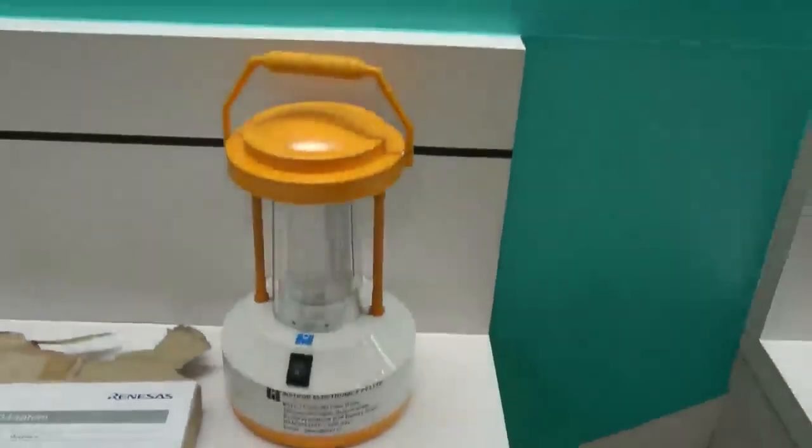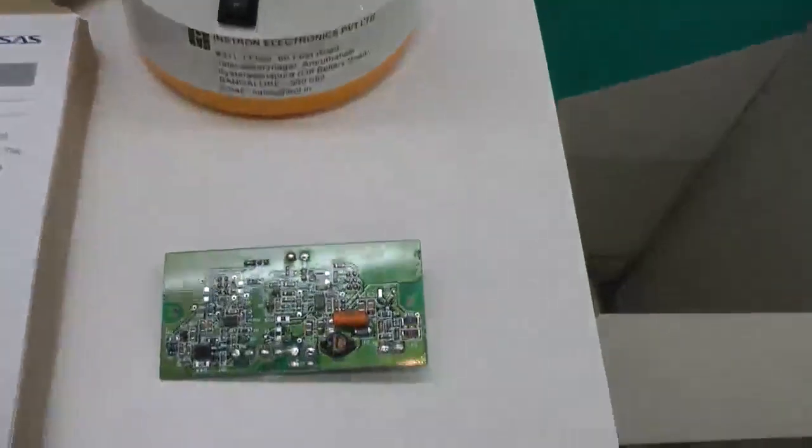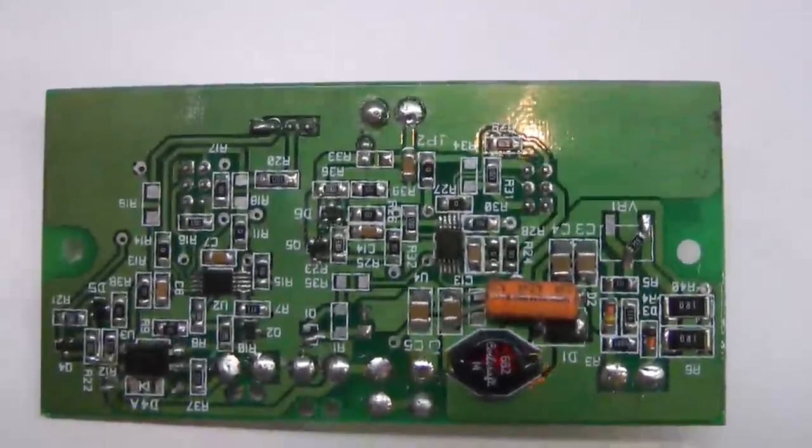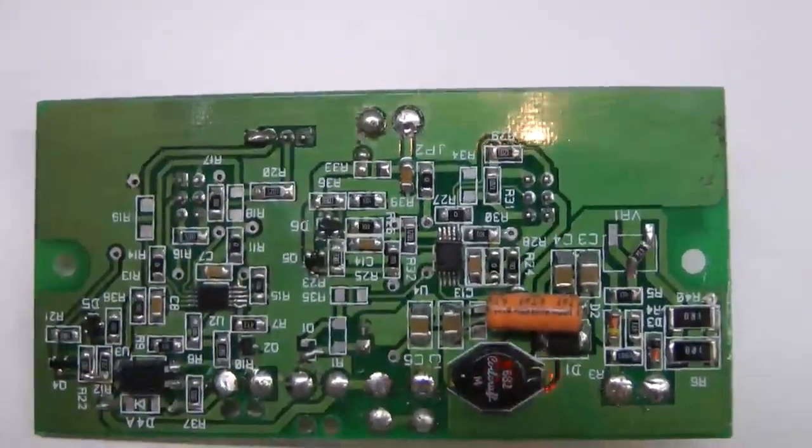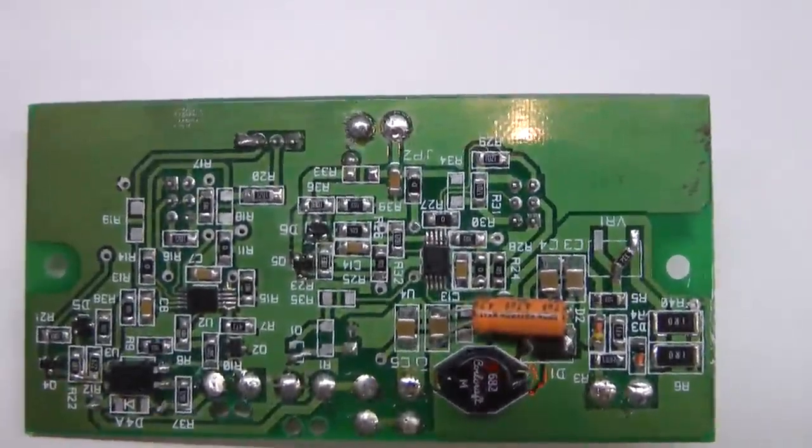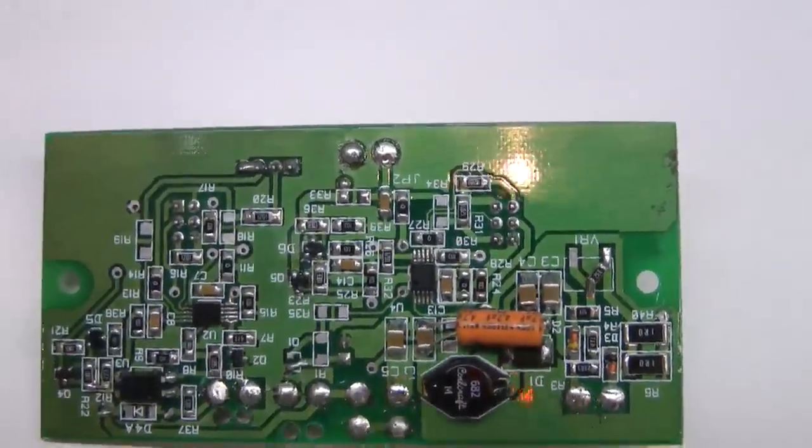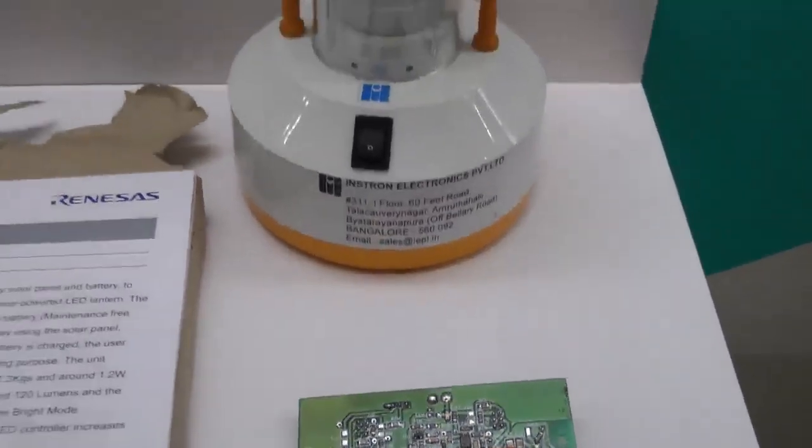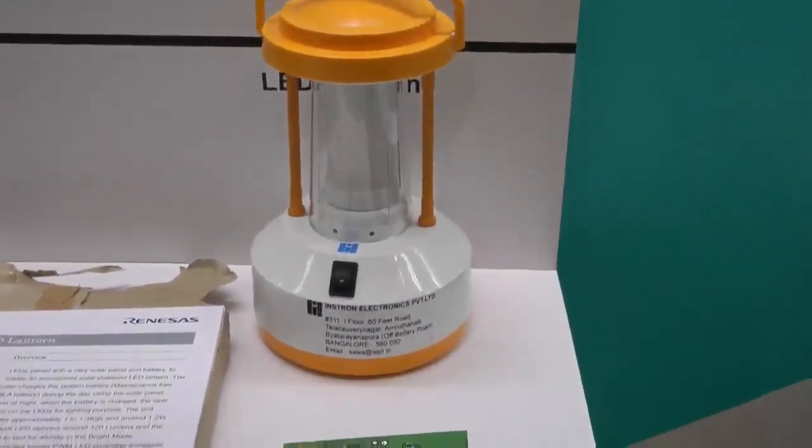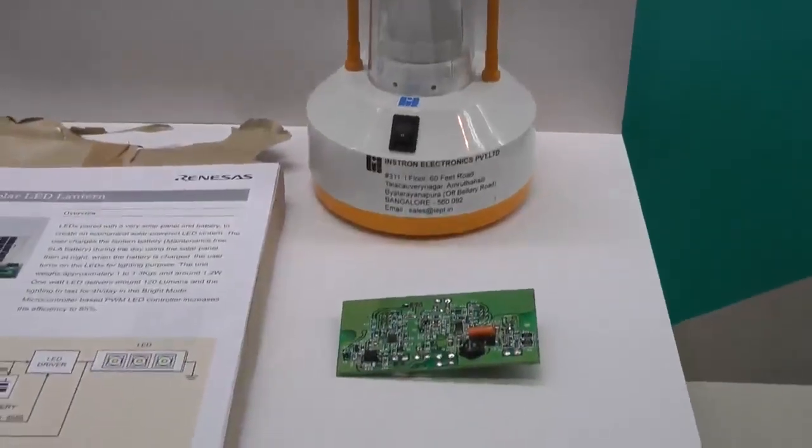In this modern world where energy savings has become very important for everyone of us, and at the same time utilizing natural resources of energy for daily life has become important. Renaissance Electronics Solar Lighting Solution using MUPD78F9202 has provided a cost effective, highly efficient solar LED lantern card for daily use.